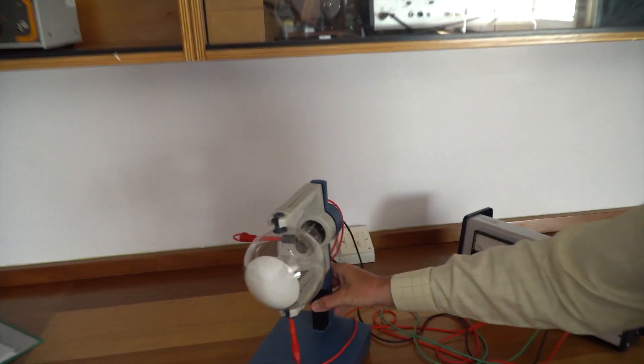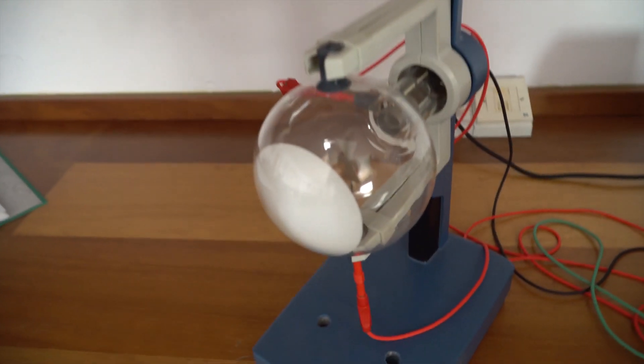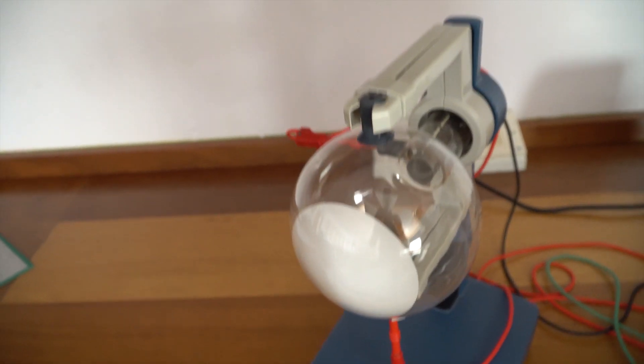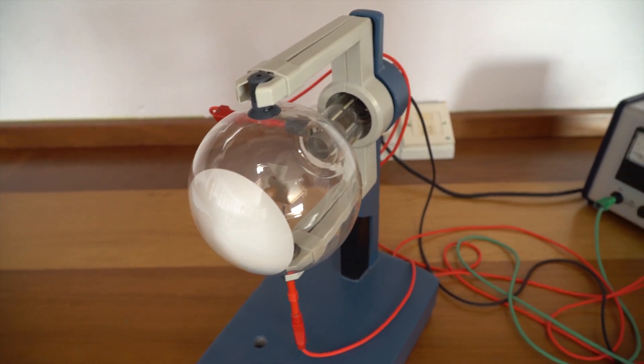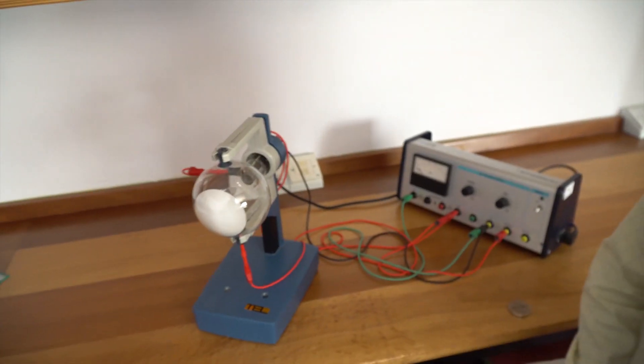You might see these around. There are variations on them. This is called the Maltese cross tube for fairly obvious reasons, and it's one of the many types of electron beam tube that physics teachers have used over the years.